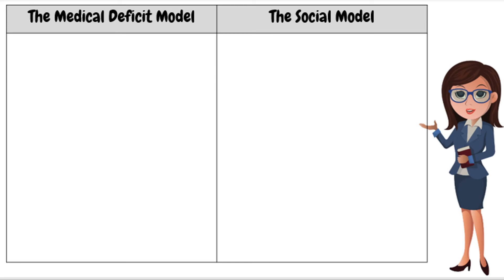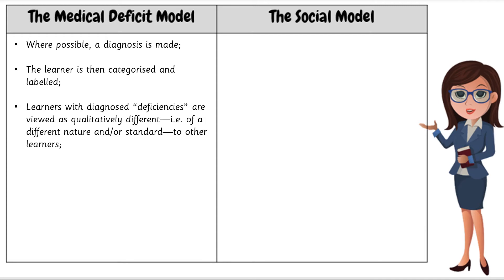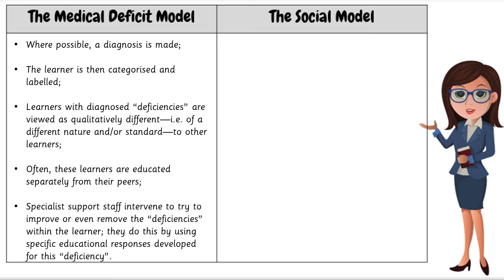Let's contrast the key characteristics of the two models. In the medical deficit model, where possible, a diagnosis is made. The learner is then categorized and labeled. Learners with diagnosed deficiencies are viewed as qualitatively different — for example, having a different nature or standard to other learners. Often these learners are educated separately from their peers. Specialist support staff intervene to try to improve or even remove the deficiencies within the learner, using specific educational responses developed for that deficiency.